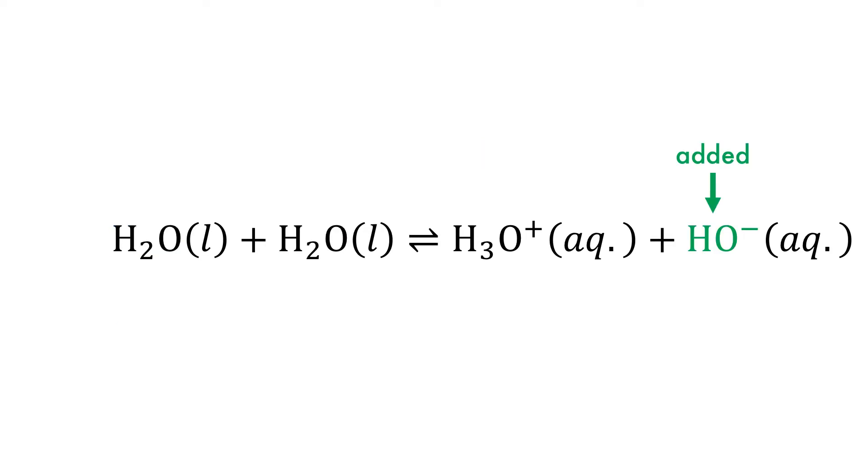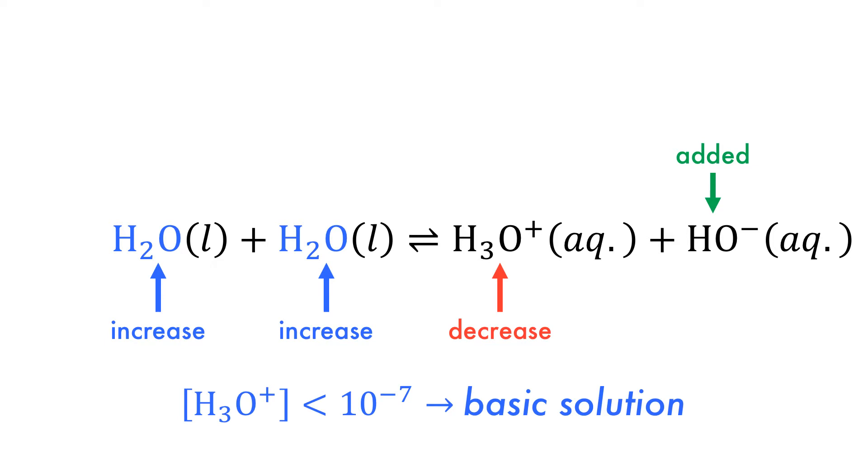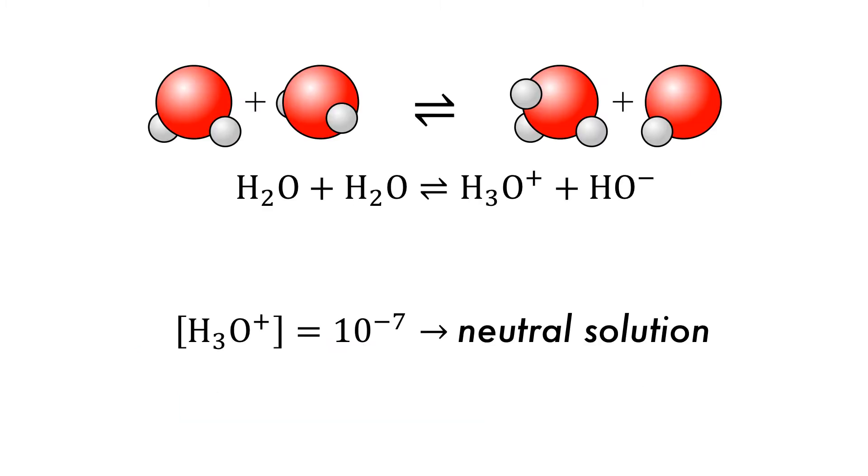Conversely, if base or hydroxide is added, then again, in line with Le Chatelier's principle, the system will move to consume some of it by reacting with acid to form water. This will create an imbalance and a basic solution, as the concentration of hydronium is less than 10 to the minus 7. If it is equal to 10 to the minus 7, then the solution is said to be neutral.